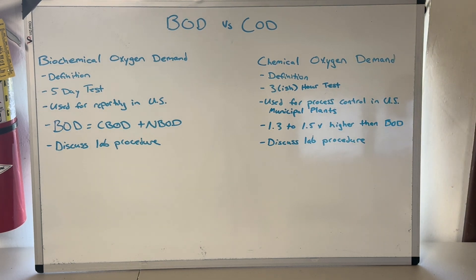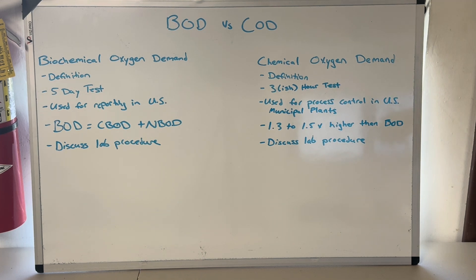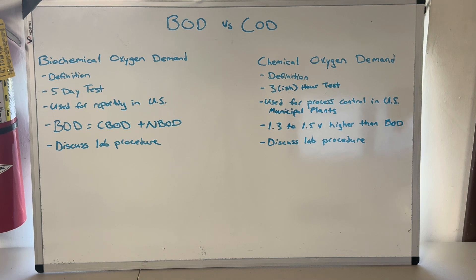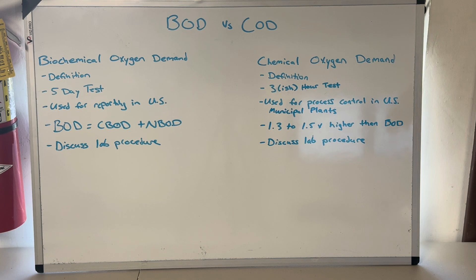The COD lab procedure is quite different. You acidify the sample, add potassium dichromate, and heat it up in a digestion process. It sits for a couple of hours, then you let it cool to room temperature and titrate the excess dichromate into a different solution — I believe it's ferrous ammonium sulfate or something similar. Once you titrate to a certain color, that tells you how much dichromate remains. You measure the dichromate at the beginning, measure it at the end, and that difference gives you your chemical oxygen demand.